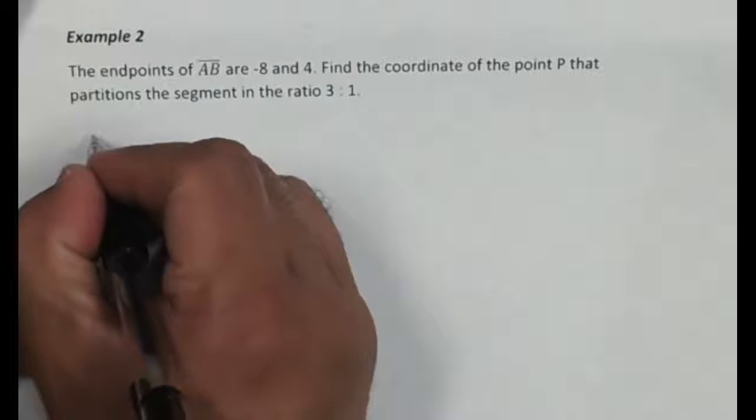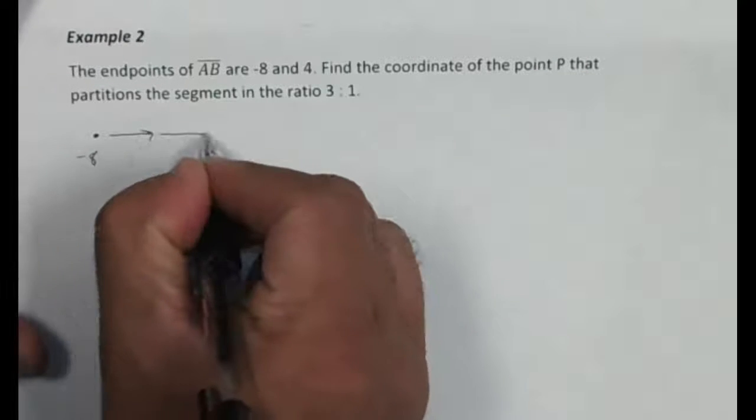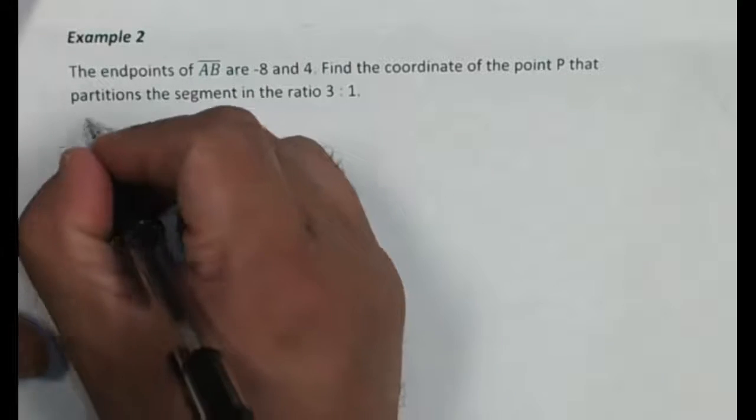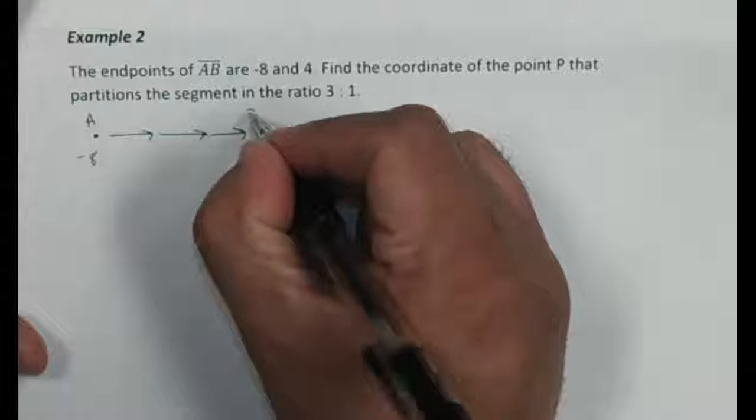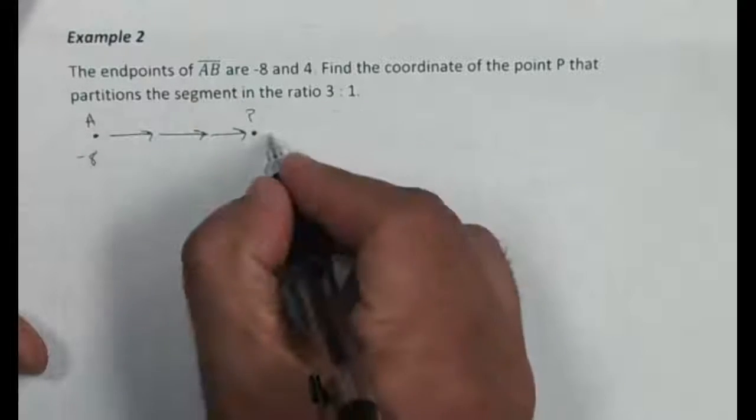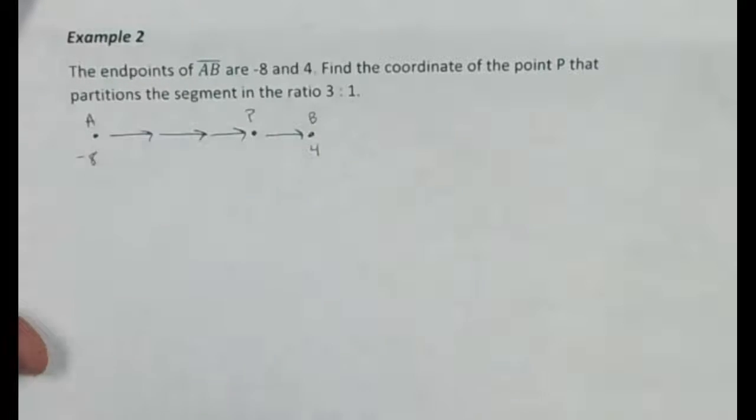All right, so I have my point A, and that's at negative 8. So I want to go 3 equal distances to the right. All right, that's going to take me from my A to my point P. Okay, but then it's a 3 to 1 ratio, so I've got 3 on this side and I've got 1 on this other side to get to B, and that's going to be at 4.